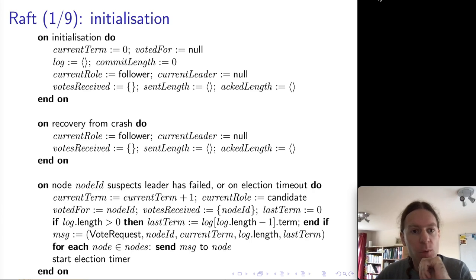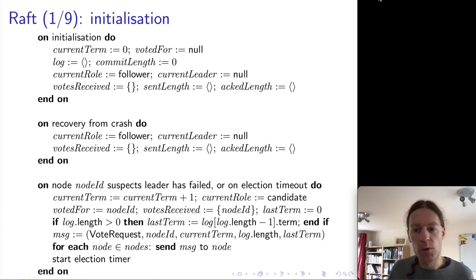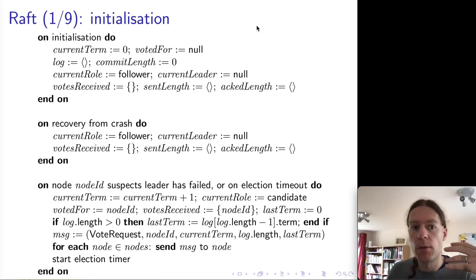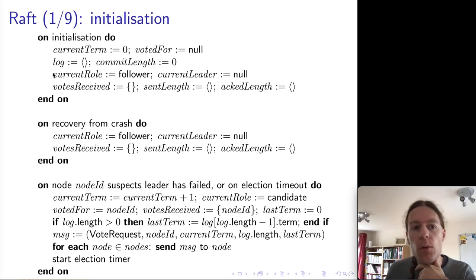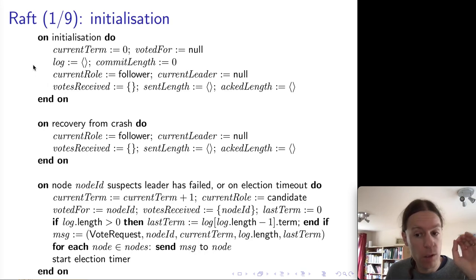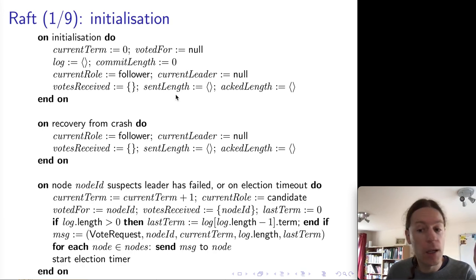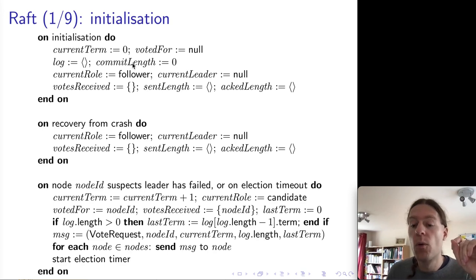Let's run through the actual code. Here we start with the usual initialization of variables. I'll explain the variables as we use them as part of the algorithm, but I'll point out the first four variables: currentTerm, votedFor, log, and commitLength. These four variables have to be stored in stable storage — that is, on disk. The remaining five variables can be in transient storage and can be lost in the case of a crash.